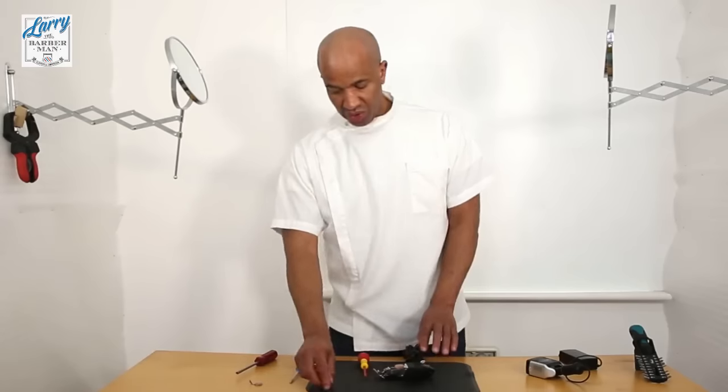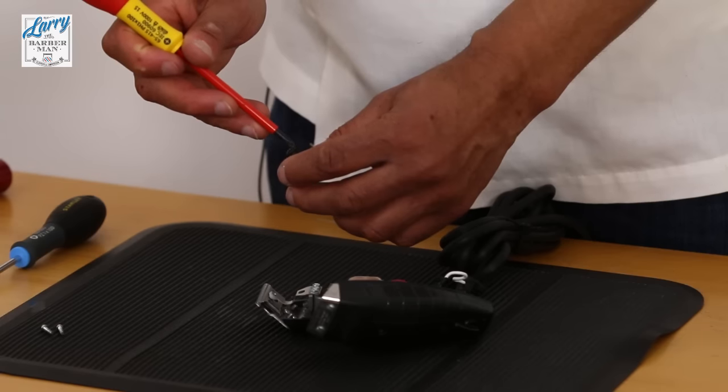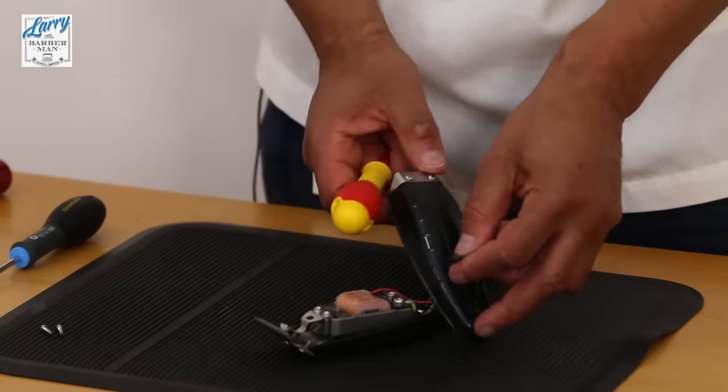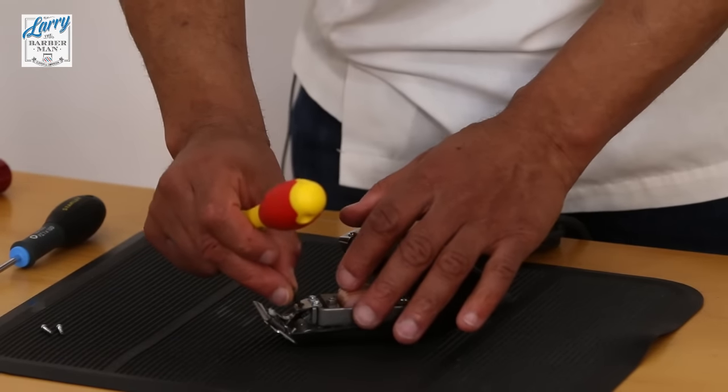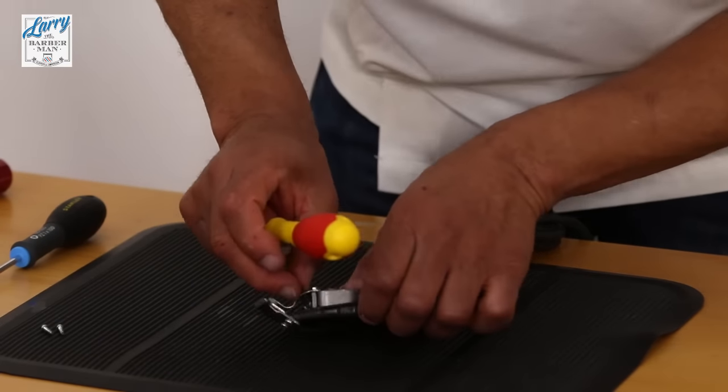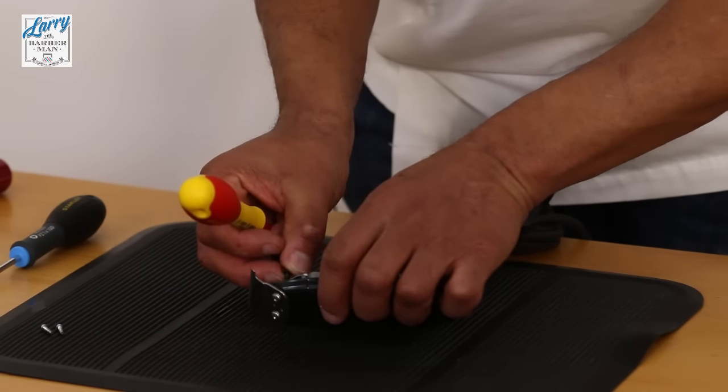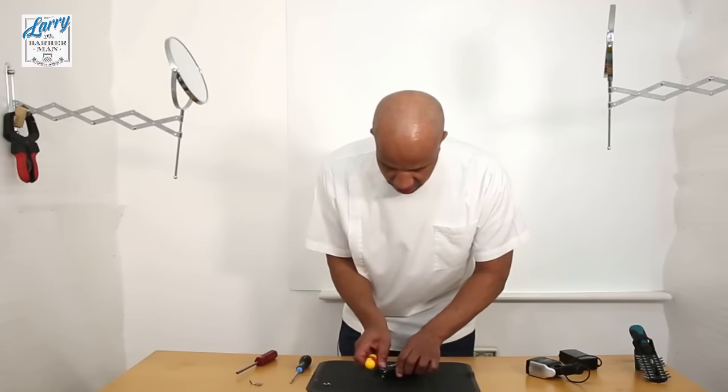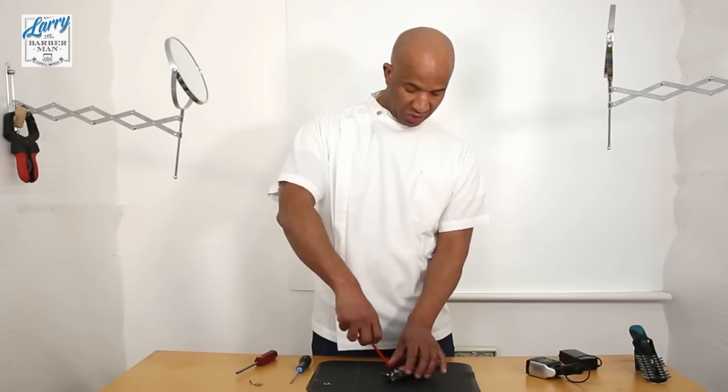Now that's secure we're going to reinsert the tension screw. This is the tension screw here, we're going to reinsert that. Look through the spring to find out exactly where the hole is. Make sure that's guided in properly. Once it's guided in properly use your Phillips screwdriver.